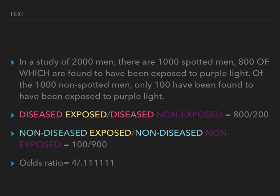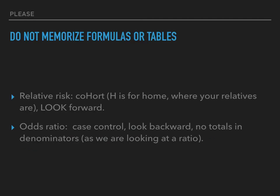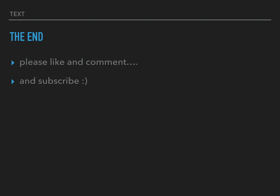Our odds ratio is thus 4 divided by 0.111, which equals approximately 36. To end, remember: do not memorize formulas or tables. For relative risk, use cohort prospective studies and look forward. For odds ratios, use case-control studies, look backward, and remember there are no totals in the denominator since we are looking at a ratio. That is the end of my lecture on odds ratio and relative risk. Please like, comment, and subscribe to my channel.